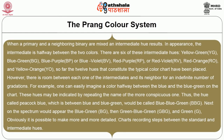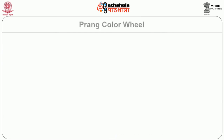When a primary and a neighboring binary are mixed, an intermediate hue results which is halfway between the two colors. There are six intermediate hues: yellow-green, blue-green, blue-purple (blue-violet), red-purple (red-violet), red-orange and yellow-orange. Between each intermediate and its neighbor there is room for an indefinite number of gradations. For example, a color halfway between blue and blue-green on the chart could be called blue blue-green. Obviously it is possible to make more and more detailed charts recording steps between the standard and intermediate hues. This is the Prang color wheel.